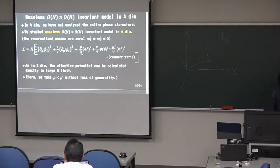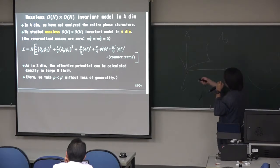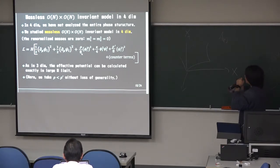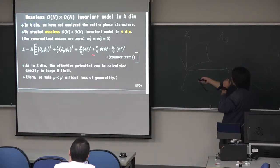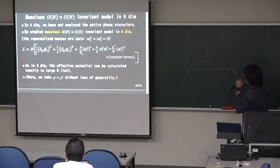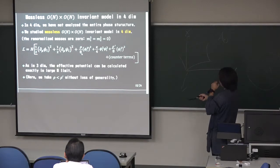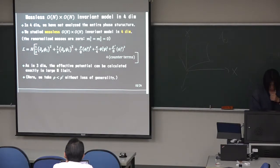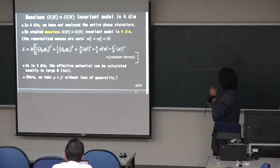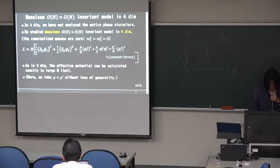Okay. I have a time, and I want to talk about the four-dimension case. In four-dimension, we have not to analyze the entire phase structure. It is difficult because of growth tax. But we have studied the massless case of the invariant model in four dimensions. So I talk about it. The lograndian, the lograndian is like this, massless case, massless case. As in three dimensions, the effective potential can be calibrated exactly in the larger limit. Here, we take that the log is smaller than log five, without the loss of generality.